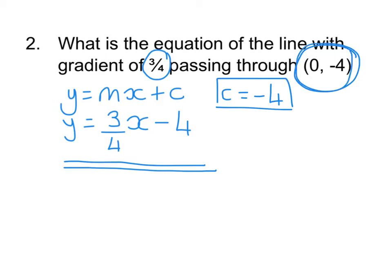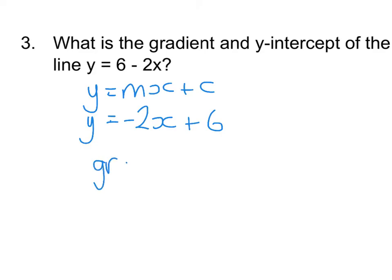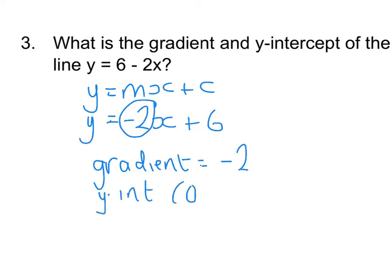Remember: any coordinate with a 0 at the beginning is your y-intercept. Third example: what is the gradient and y-intercept of this line? It's the reverse of the last question — I've given you the equation of the line and we want to write down the gradient and y-intercept. I'm going to rearrange it into y equals mx plus c by putting the x part at the front: y equals minus 2x plus 6. So gradient equals the number in front of x, which is minus 2. And your y-intercept, written as a coordinate, is 0, positive 6.